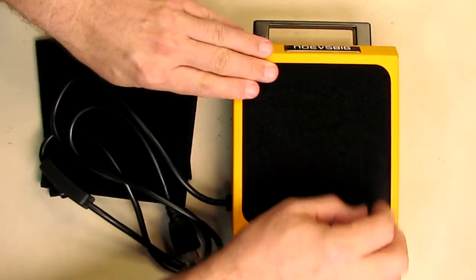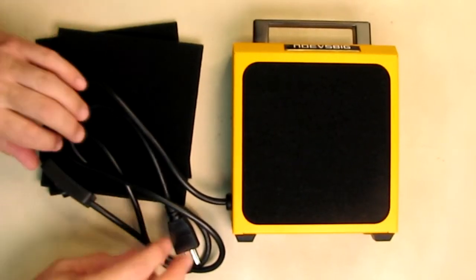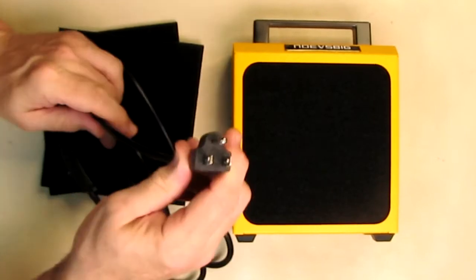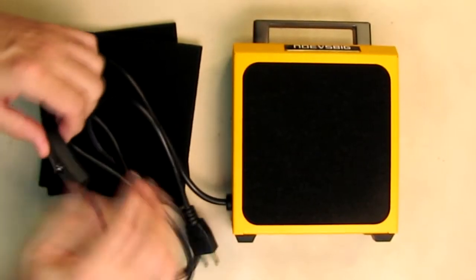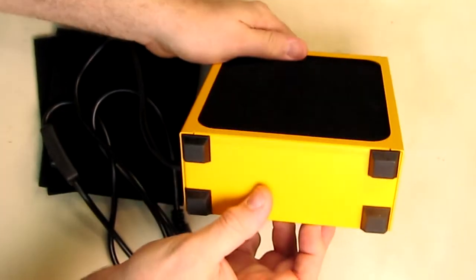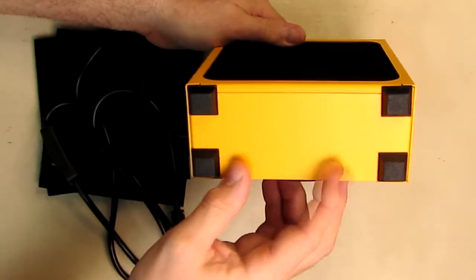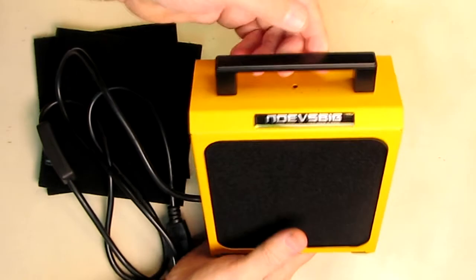It comes with two additional filters and a nice long USA 120-volt grounded cord with a power switch. On the bottom of this unit, it's very heavy duty with oversized rubber legs. There's a nice handle, and you can see the company name right there.